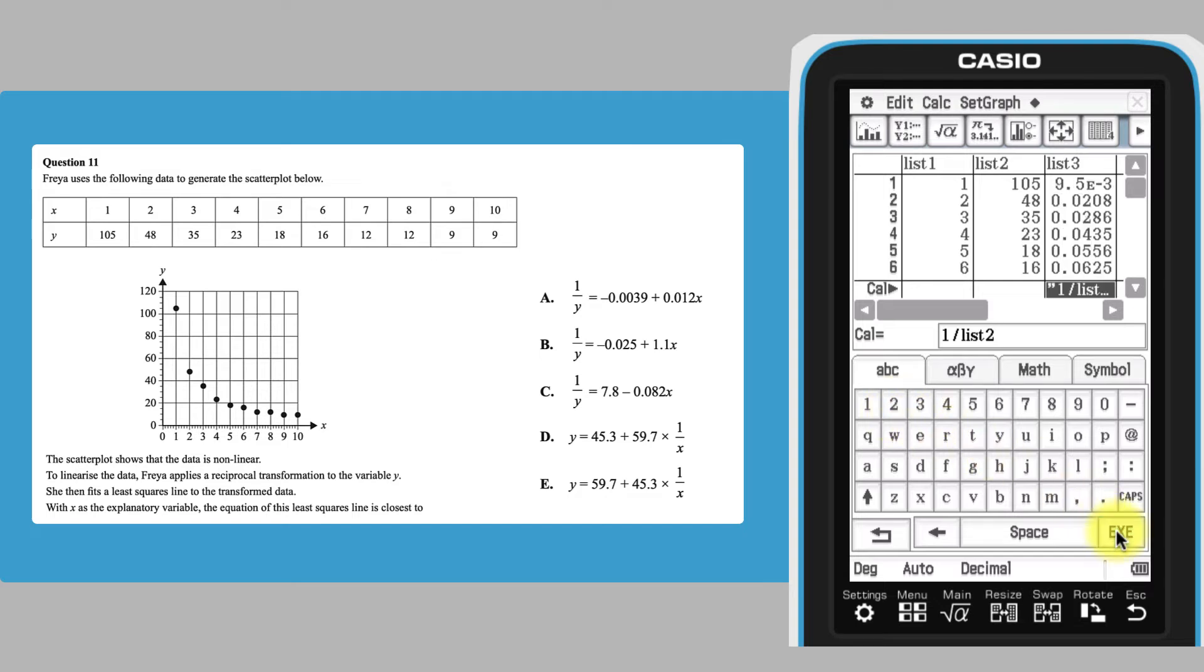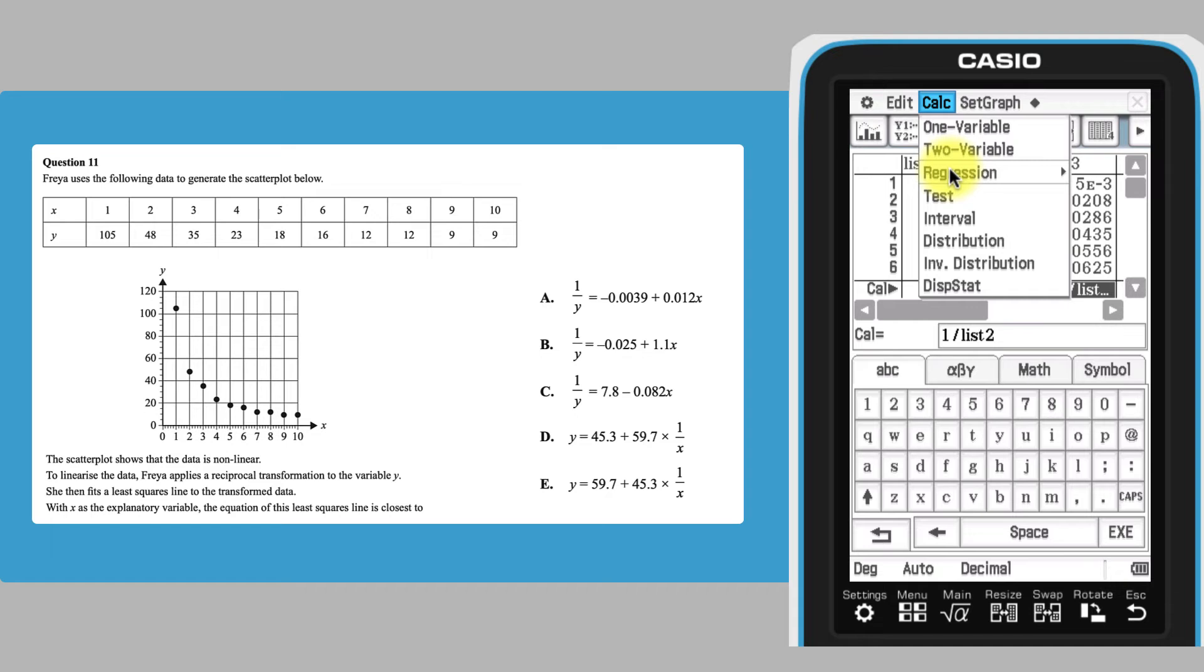With the transformation done, the least squares regression line can be determined. Open the calc menu, select regression and choose linear regression.